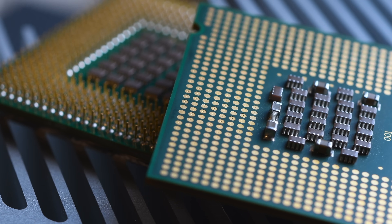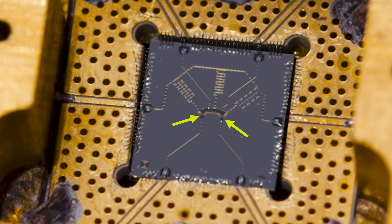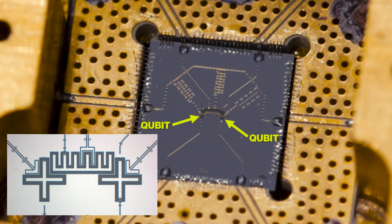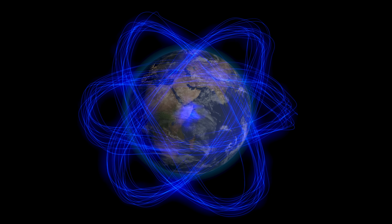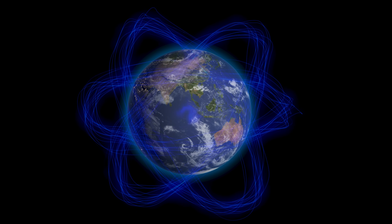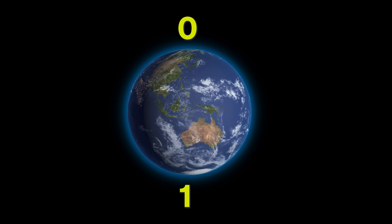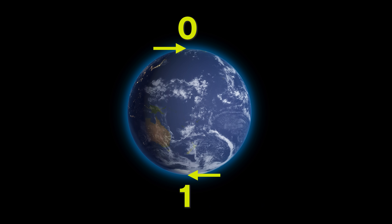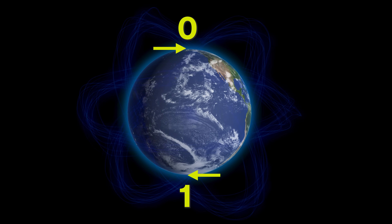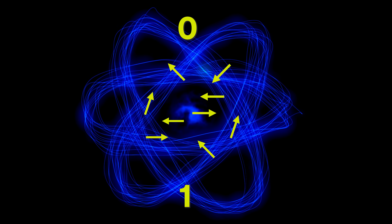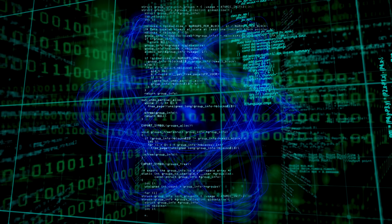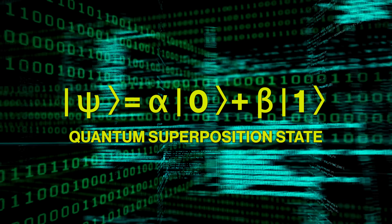Instead of transistors, in my quantum computer I have quantum bits, or qubits. Qubits can also represent digital zero or digital one, but importantly they can also represent superpositions of zero and one simultaneously. The way that we think about this is in terms of the planet Earth, where the North Pole is state zero and the South Pole is state one. If you're a transistor, you can only be at the North Pole or the South Pole. But qubits, like humans, can be anywhere on the surface of the planet Earth. And when we're anywhere other than the North or South Pole, we are in a quantum superposition of zero and one simultaneously.